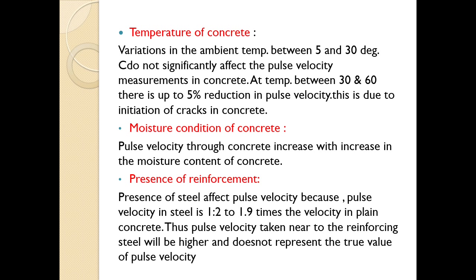Regarding temperature, variations between 5 and 30 degrees Celsius do not significantly affect pulse velocity. However, at temperatures between 30 and 60 degrees Celsius, there is up to a 5% reduction in pulse velocity due to the formation of cracks in the concrete. For moisture condition, pulse velocity increases with increase in moisture content of the concrete, so care should be taken. Regarding presence of reinforcement, steel affects pulse velocity because the pulse velocity in steel is in the ratio of 1:2 to 1.9 times the velocity in plain concrete. Thus, pulse velocity measured near reinforcing steel will be higher and does not represent the true value.